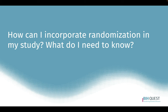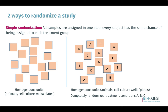How can you incorporate randomness or randomization into your study? There are several ways. One is simple randomization, where all samples are assigned in one step and it's important that every subject has the same chance of being assigned to each treatment condition. You take your animals or cell culture wells, give them an ID, and then assign conditions completely at random in one step.